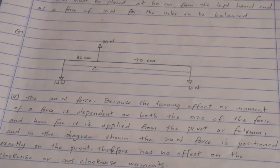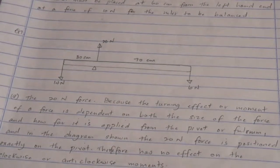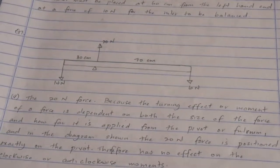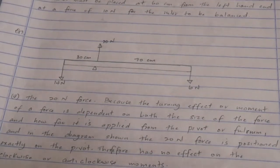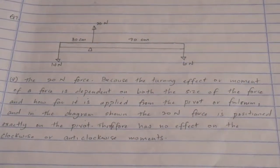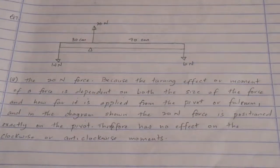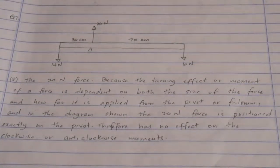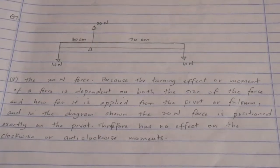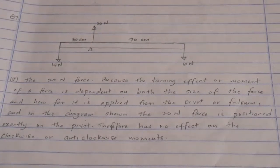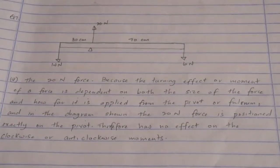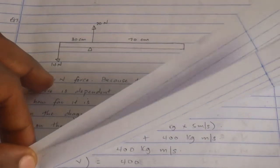All right, number seven. A ruler is placed on the pivot and three forces act on it as shown. Which force has no moment about the pivot? Explain the answer. All right, it says here a 20 newton force. Because the turning effect or moment of a force is dependent on both the size of the force and how far it is applied from the pivot or fulcrum. In the diagram shown, the 20 newton force is positioned exactly on the pivot, therefore it has no effect on the clockwise or anti-clockwise moment. It does not create any clockwise or anti-clockwise moment.